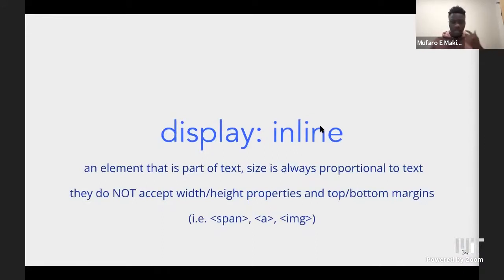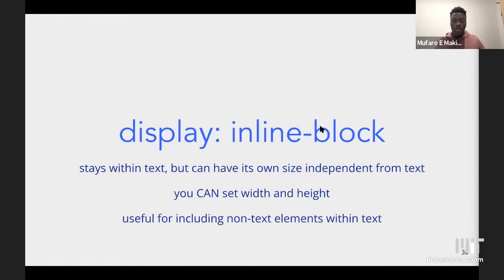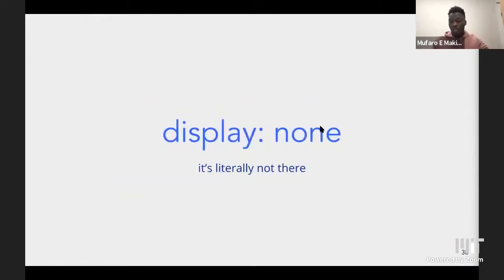With display inline, the element appears in line with the text, but you don't have the liberty to change the width, height, or padding. There are cases where you want a mixture of inline and block, and CSS lets you do this using display inline-block. With inline-block, your element appears in line with the text but you have the liberty to add height, width, or margin and padding. There's also display none, for which the element is not visible on the page.